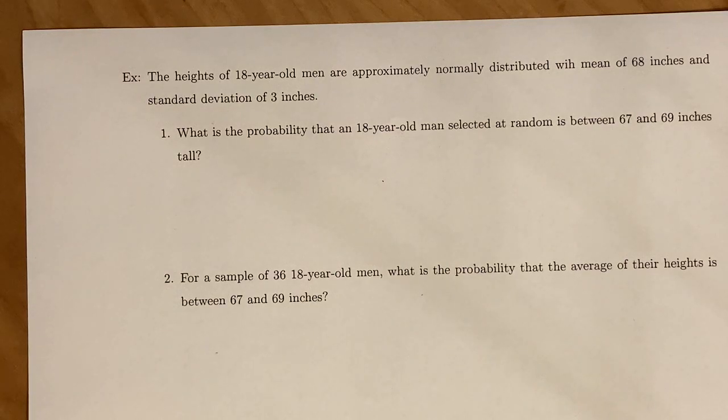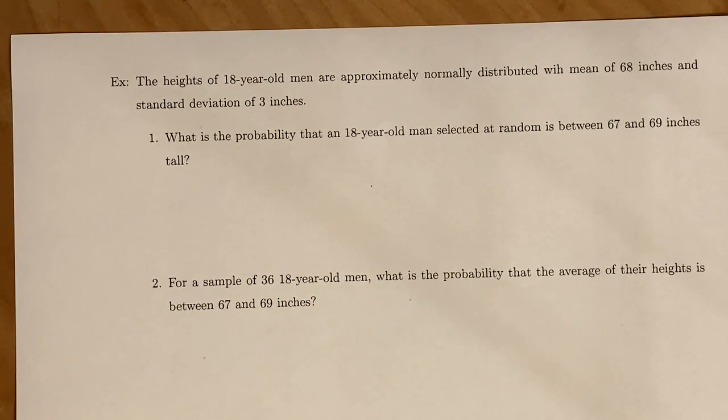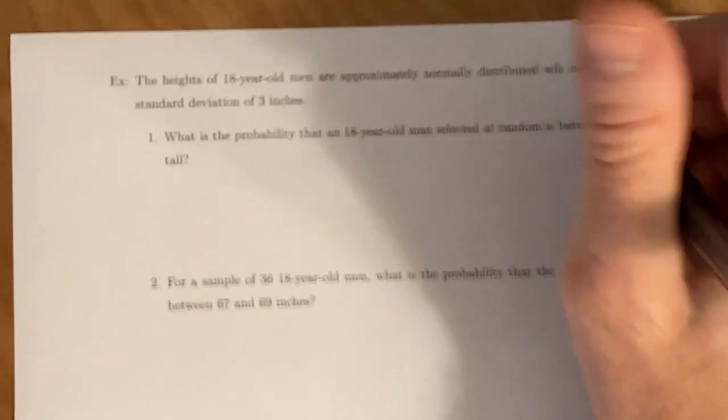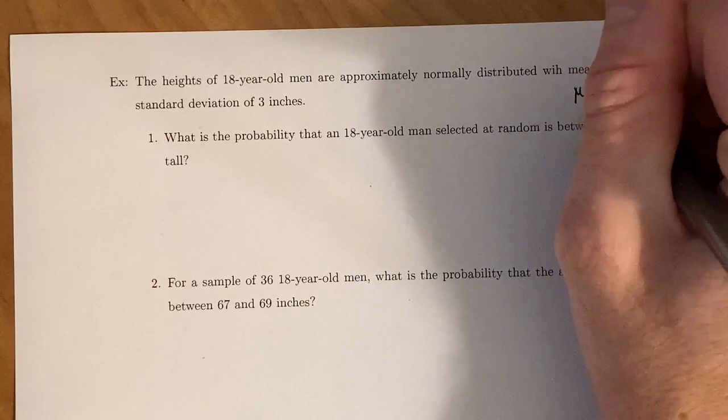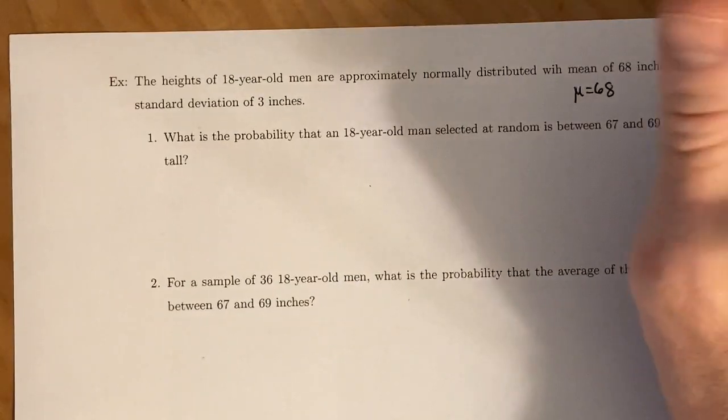So the heights of 18-year-old men are approximately normally distributed. So even though it's already normally distributed, we can run it through the central limit theorem, and it's still going to stay normally distributed. Now, the mean is 68 inches and a standard deviation of 3.